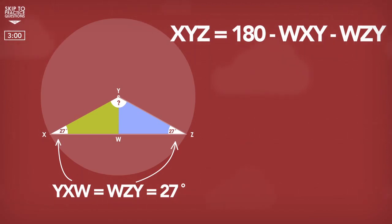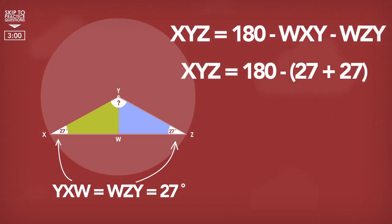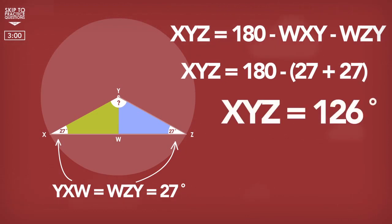Therefore, angle XYZ is 180 minus the total of 27 plus 27. Angle XYZ equals 180 minus 54, which is 126 degrees.